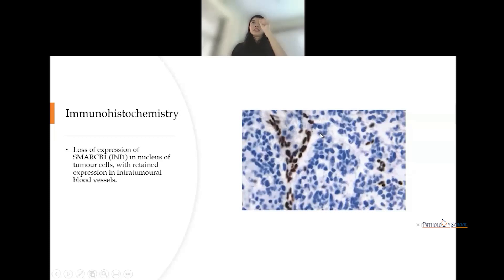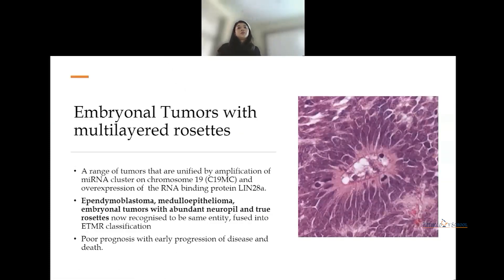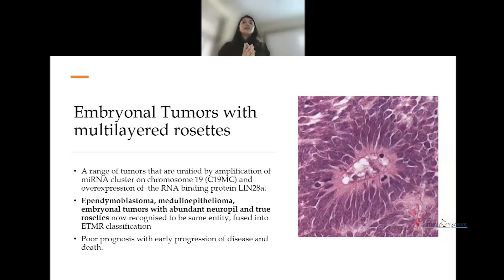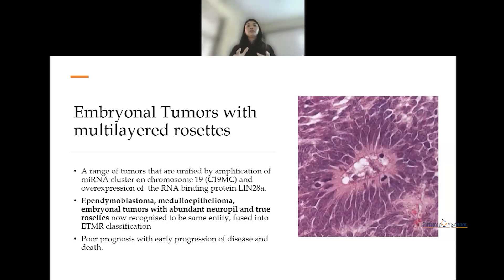Embryonal tumors with multi-layered rosettes (ETMR): these tumors show multi-layered rosettes as the main diagnostic feature. Any tumor showing C19MC amplification or fusion on chromosome 19 and overexpression of the RNA-binding protein LIN28A falls in this category. Under this umbrella, three tumors have been described and merged: ependymoblastoma, medulloepithelioma, and embryonal tumor with abundant neuropil and true rosettes (ETANTR). These tumors have a very poor prognosis with early disease progression.